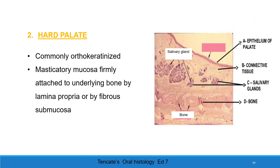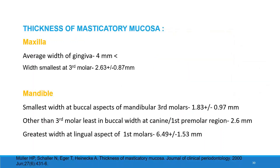Hard palate. The hard palate is mostly orthokeratinized. Masticatory mucosa is firmly attached to the underlying bone by lamina propria or by fibrous submucosa. Thickness of masticatory mucosa: in the maxilla, the average width of gingiva is 4 mm. Width is smallest at the third molar, which is 2.46 ± 0.87 mm. In the mandible, the smallest width at the buccal aspect of the mandibular third molar is 1.83 ± 0.97 mm. Least buccal width elsewhere is at the canine and first molar region at 2.6 mm. Greatest width is at the lingual aspect of the first molar at 6.49 ± 1.53 mm.